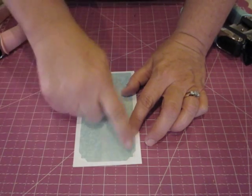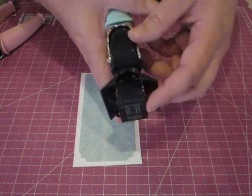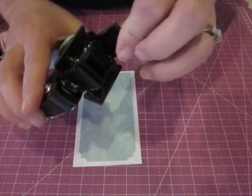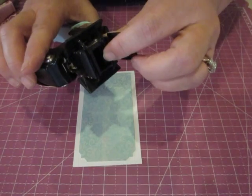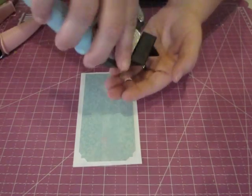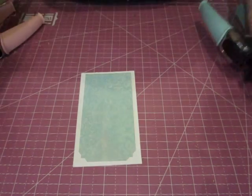So I punched it and then, as you know, each Corner Chomper has this little reservoir and all of your scraps are inside there. Well, when I poured them out, look what I found.